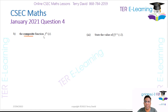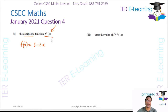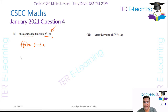The next part asks us to find the composite f squared. Now, what students tend to do is just square f(x), thinking that's what they have to do, but that's incorrect. f squared is actually a composite function. So f squared of x is actually equal to f of f — that's what we're doing.